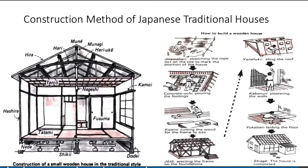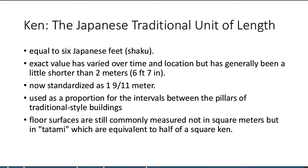Ken is the Japanese traditional unit of measurement, equal to 6 Japanese feet. Its exact value varied over time and location but has generally been a little shorter than 2 meters. The shaku is standardized as 1.9 by 1.1 meters and is used as a proportion for intervals between pillars in traditional-style buildings.